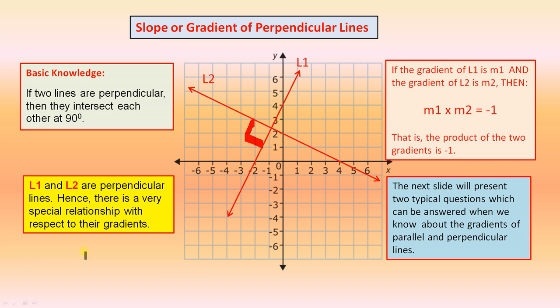L1 and L2 are perpendicular lines. Hence, there is a very special relationship with respect to their gradients. And this is a very important relationship here.